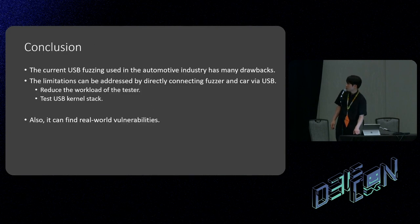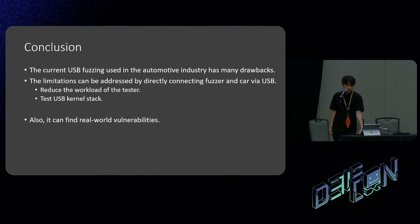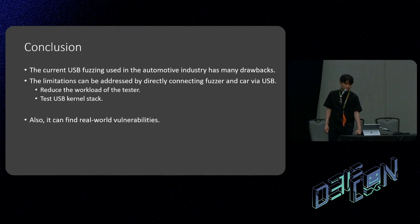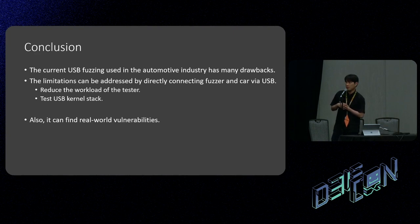Those are our demo videos. To conclude: the current USB fuzzing used in the automotive industry has many limitations — it's too complicated and requires huge workloads for testers. These limitations can be addressed by directly connecting the fuzzer and car via USB cable. The USB gadget and raw gadget make this possible. We can significantly reduce the workload of testers, test the USB kernel stack, and find real-world vulnerabilities. Thank you.